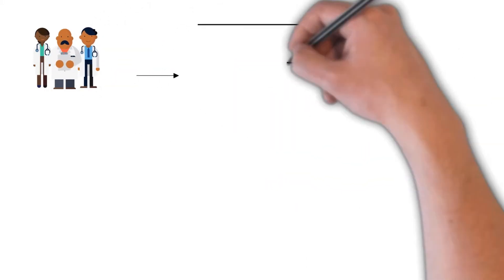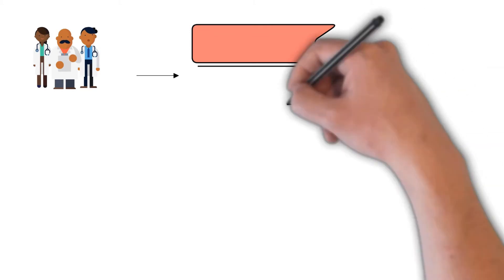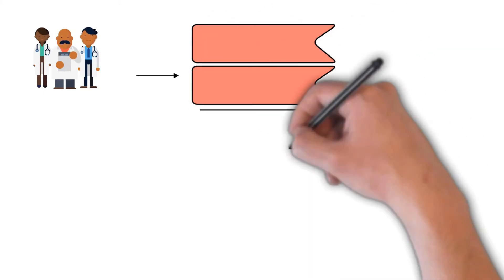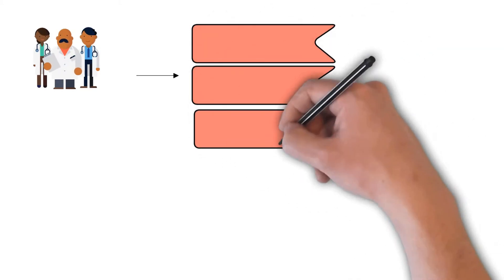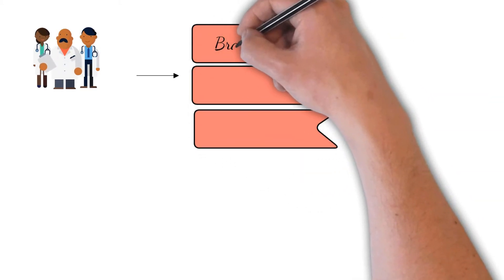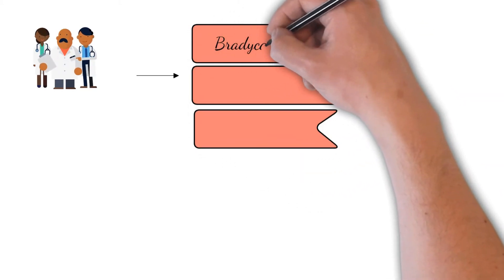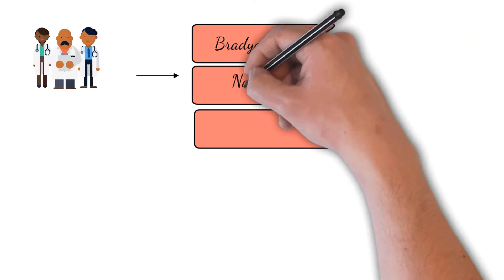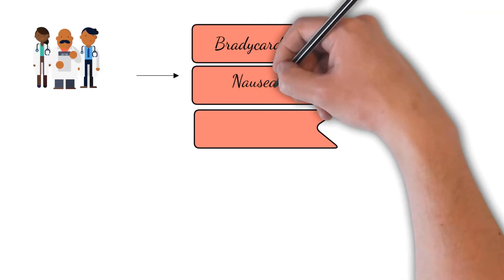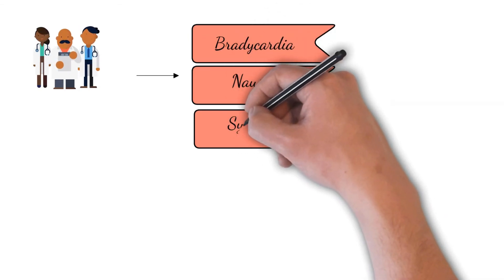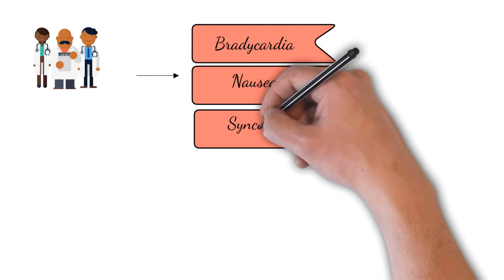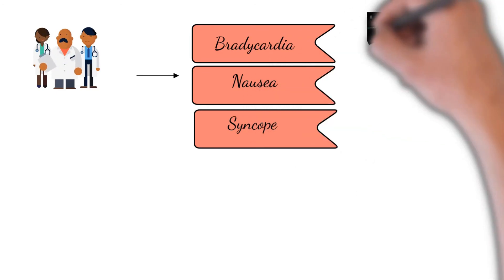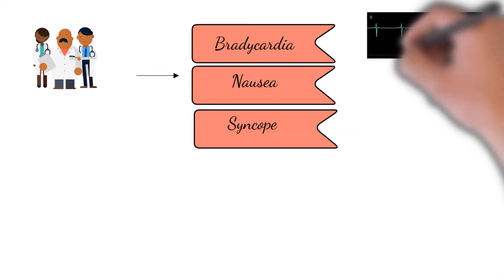There is a classical triad of the oculocardiac reflex which includes bradycardia, nausea, and syncope. So this is the classical triad of the oculocardiac reflex.